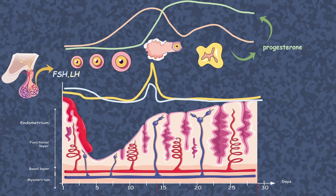This LH surge is the key event of the follicular phase. Following the follicular phase is the luteal phase, where the corpus luteum is the center of attraction. The corpus luteum secretes progesterone, leading to high progesterone levels. If the woman is pregnant and fertilization has taken place, the progesterone level is maintained, which maintains the endometrial lining and creates a supportive environment for the embryo to be implanted and to develop.